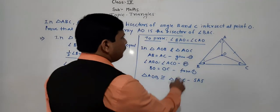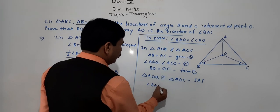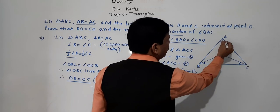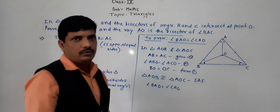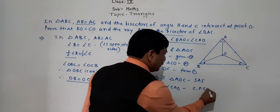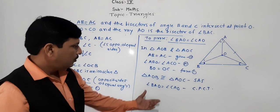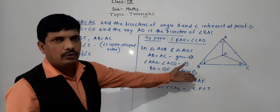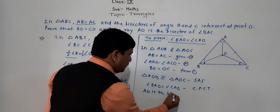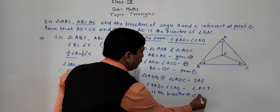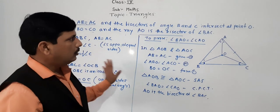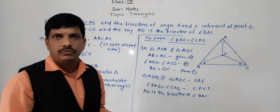Since the triangles are congruent, by CPCT angle BAO is equal to angle CAO. Therefore AO is the bisector of angle BAC. Solve all the problems in the notebook and complete the given worksheets.